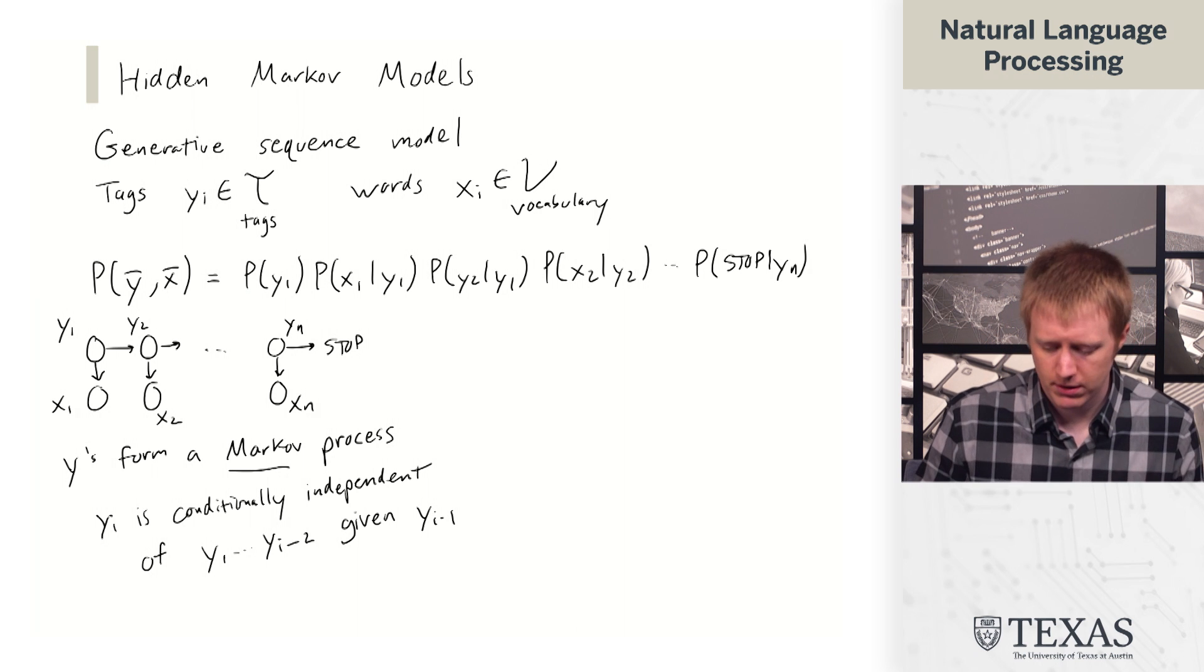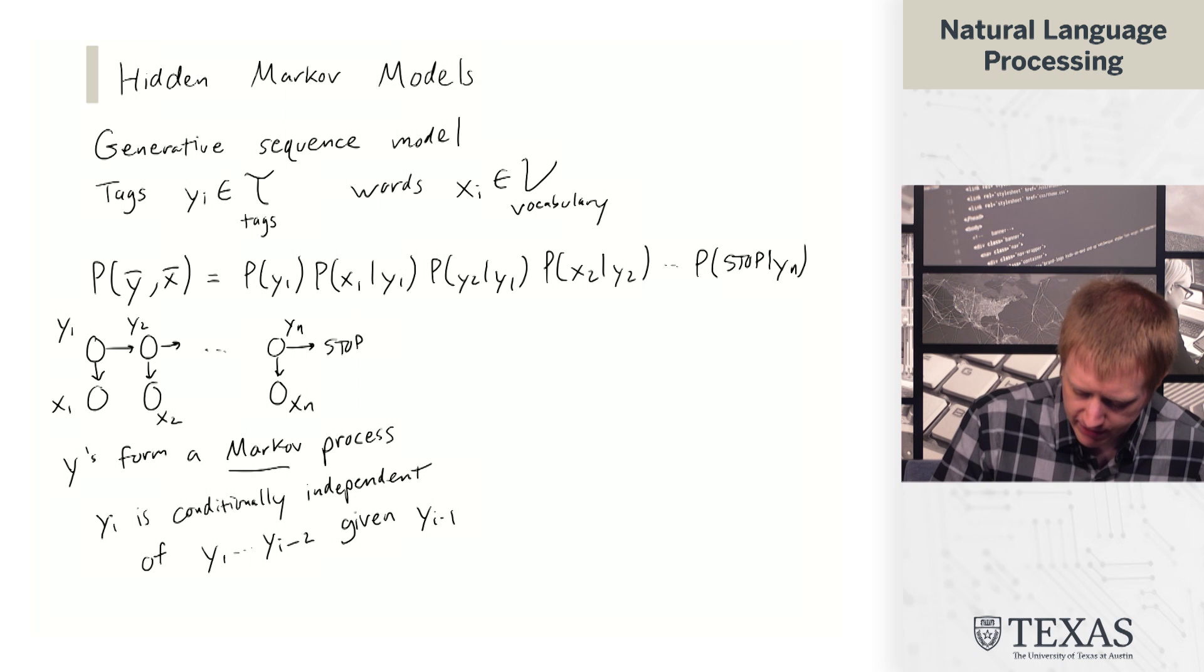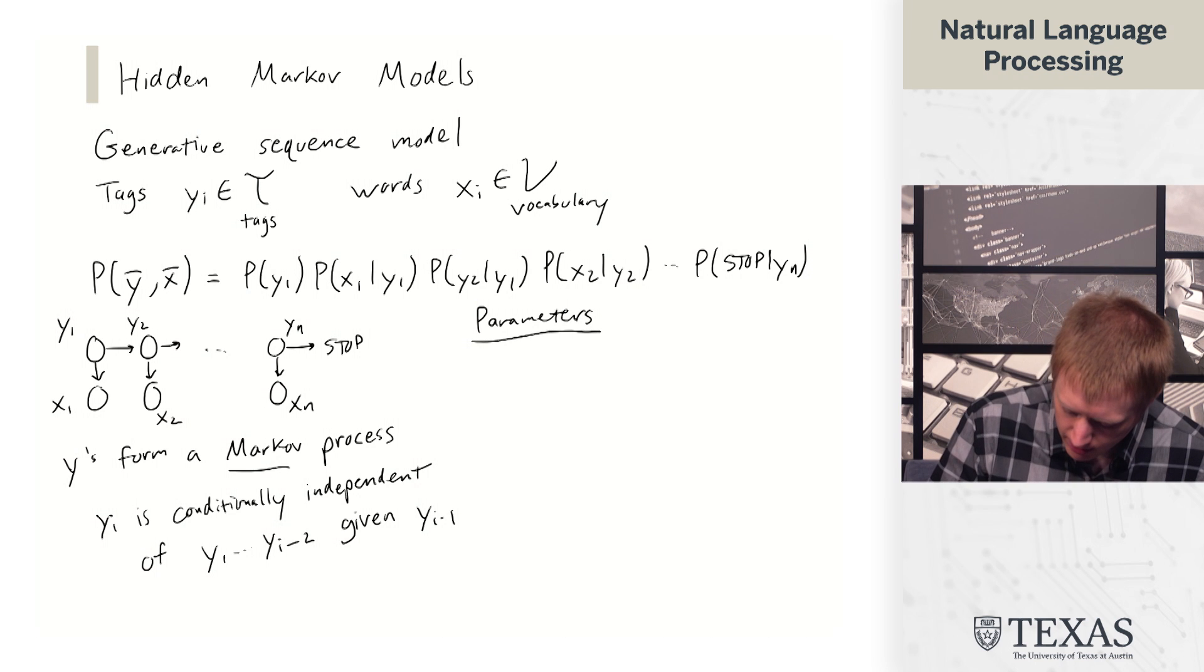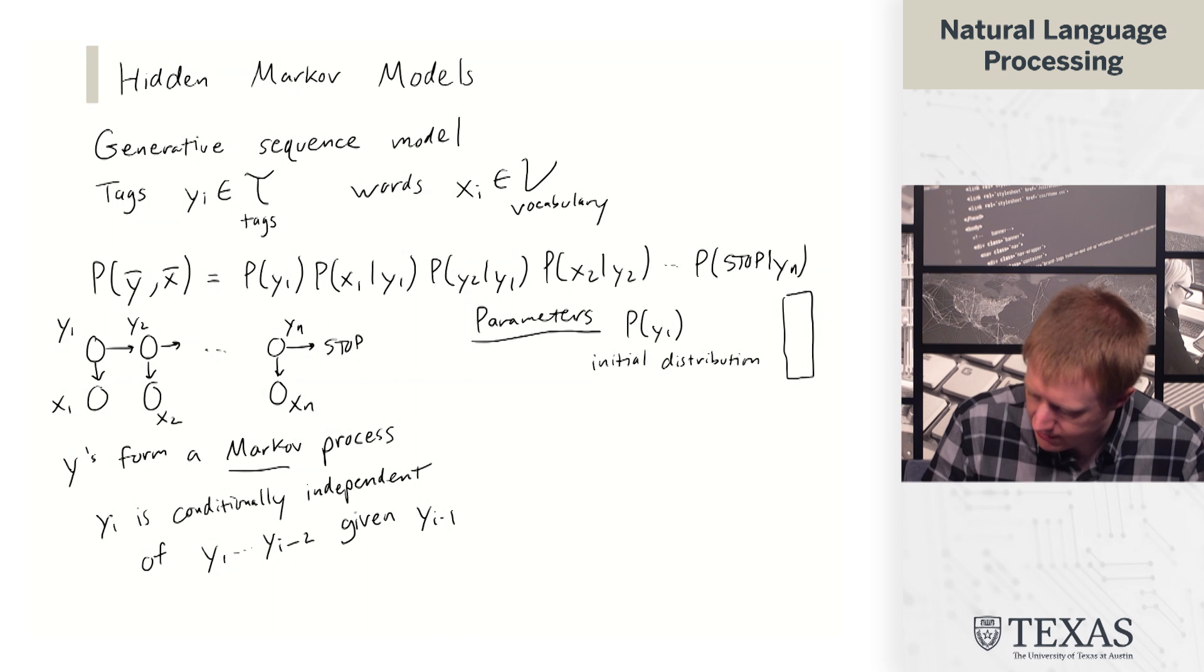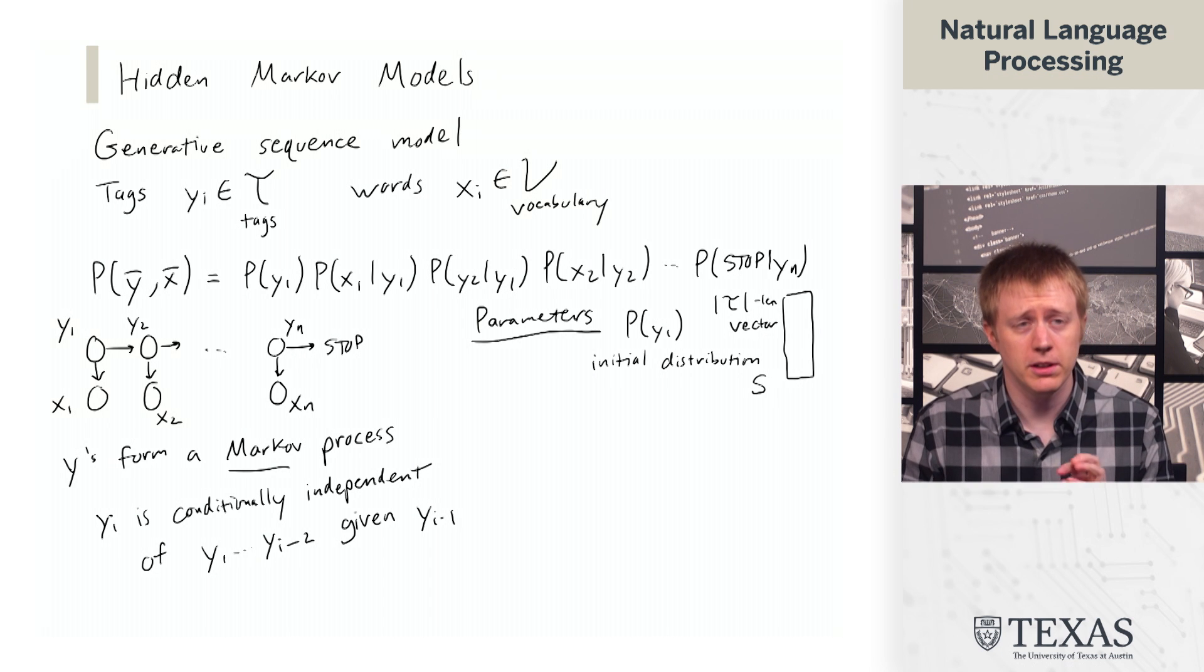Okay, so what we also want to think about are the parameters of this model. So we have P of Y1, which is called the initial distribution. And so I'm just going to draw that. We're going to call that S. And this is a T-length vector. So it is a probability distribution.